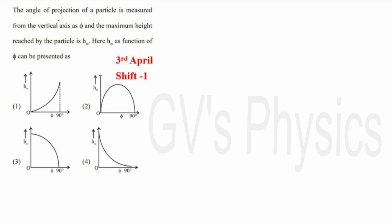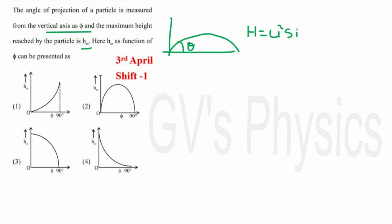We will see the second question. The angle of projection of a particle is measured from the vertical axis as φ. The maximum height reached by the particle is h. They are asking for the graph relating height h to the vertical axis angle φ. For that we take the basic theory: when throwing an object with velocity u at angle θ with the horizontal, the formula is h = u²sin²θ/2g. But here they are asking the angle with respect to the vertical axis φ.